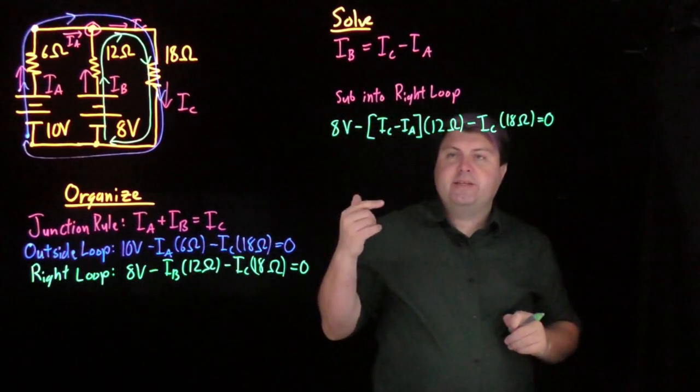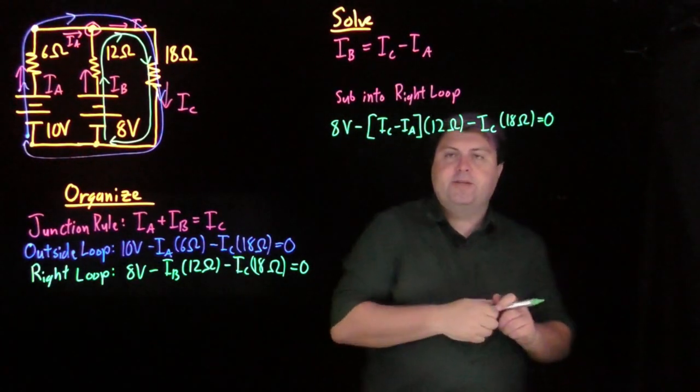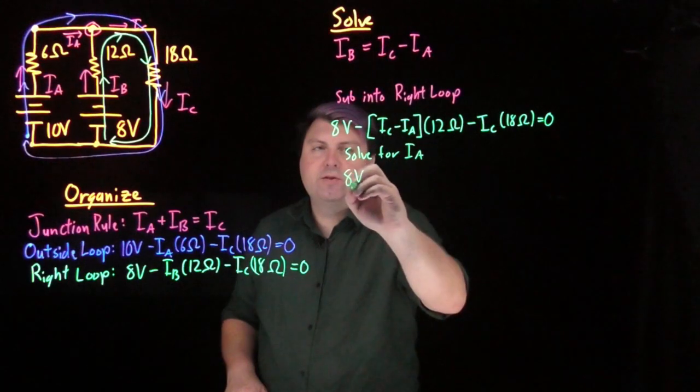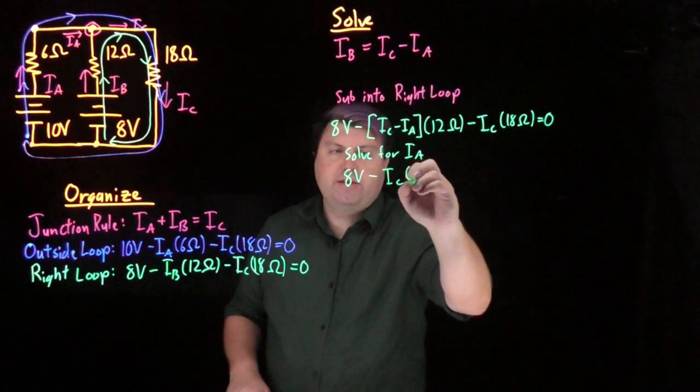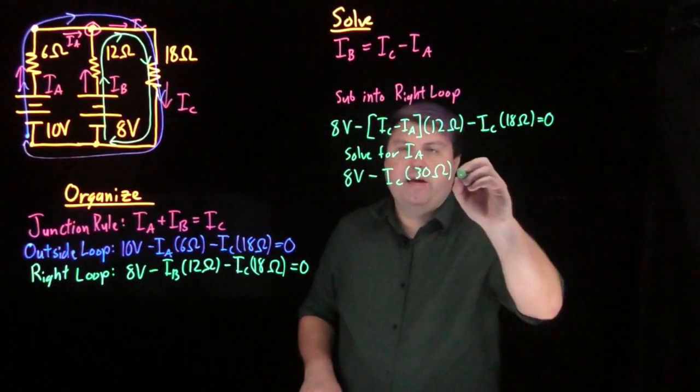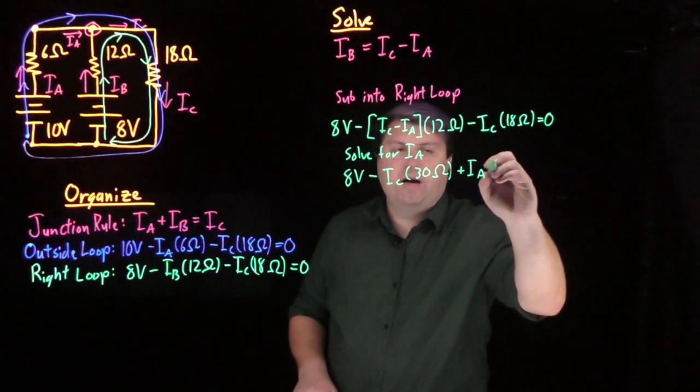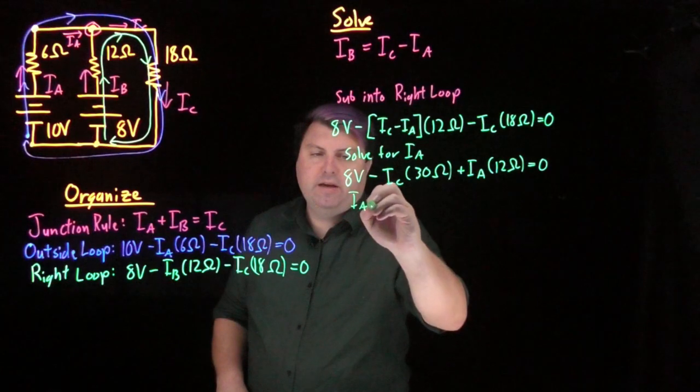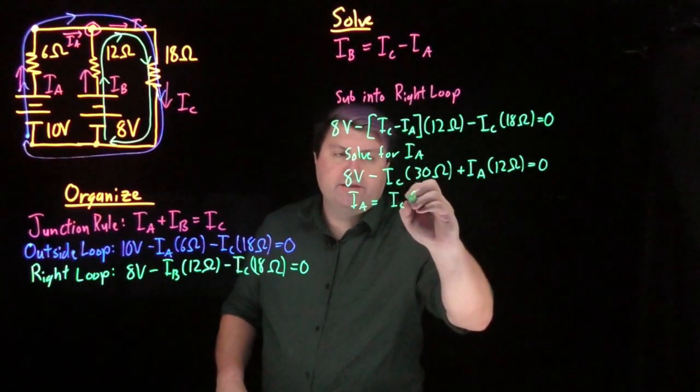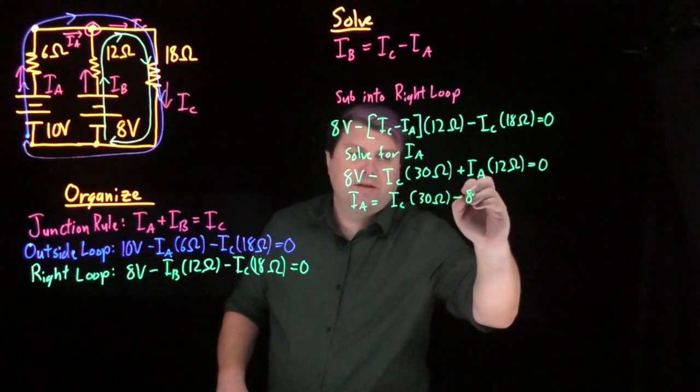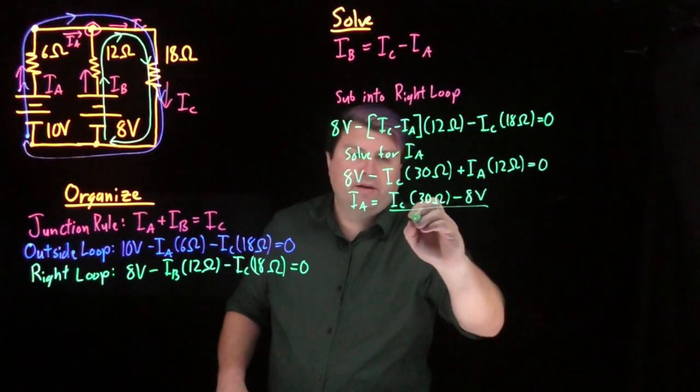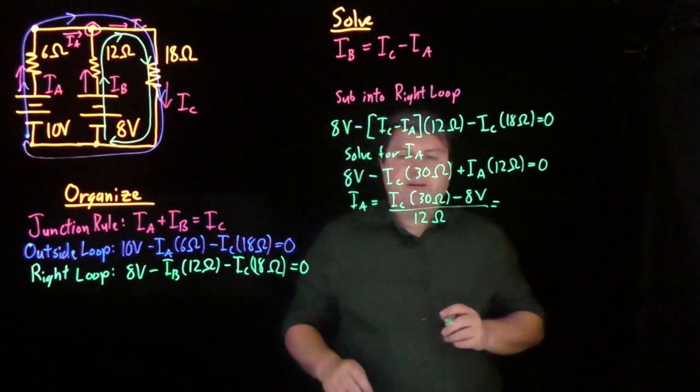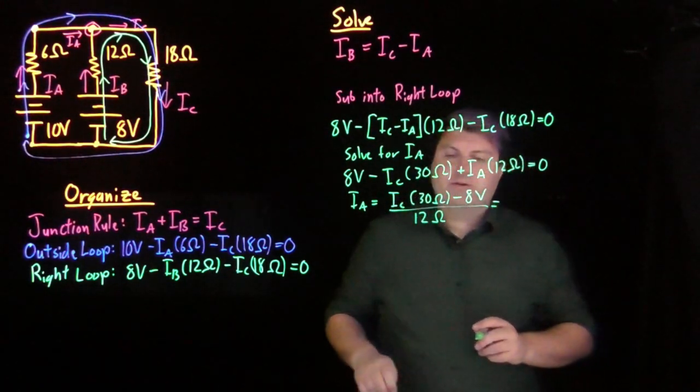But the next thing I can do is I can solve for one of these. Since I only have one Ia term, I might want to solve for Ia. So in this case, I have 8 volts minus 12 minus 18 gives me minus Ic times 30 ohms. And then minus minus gives me plus Ia times 12 ohms. So I can move both of these over.